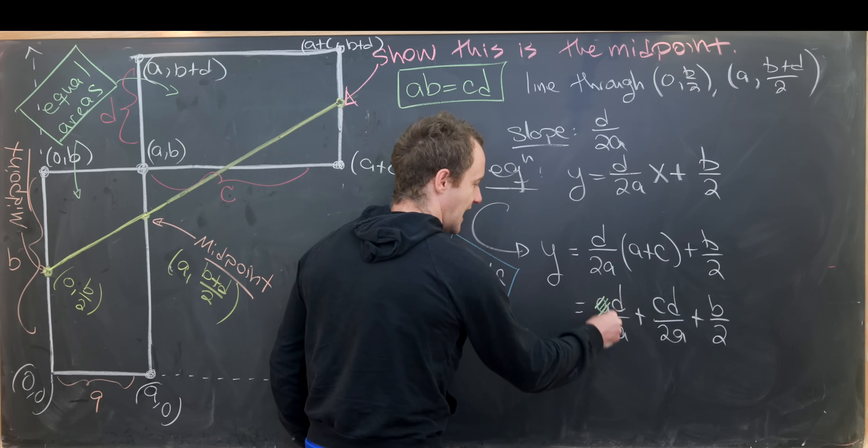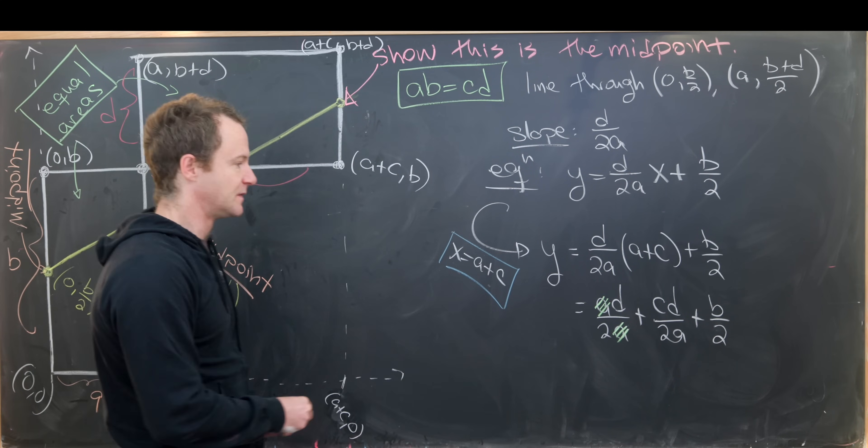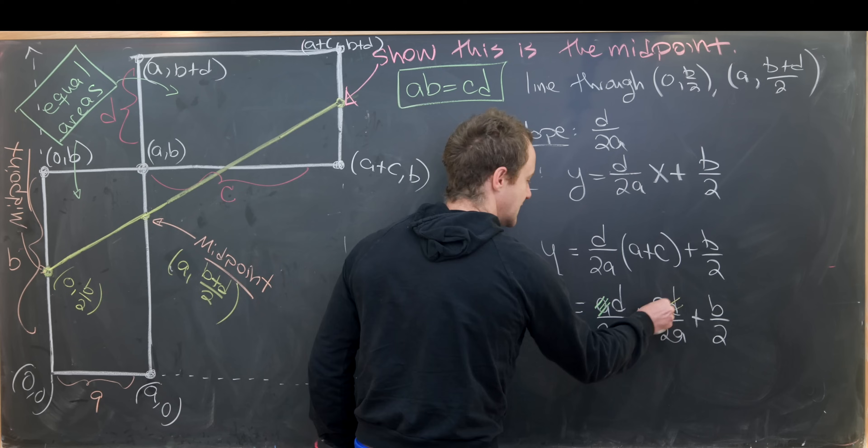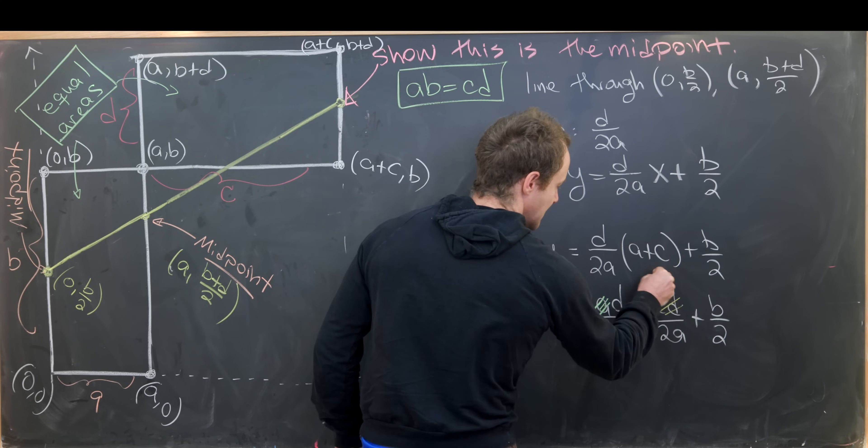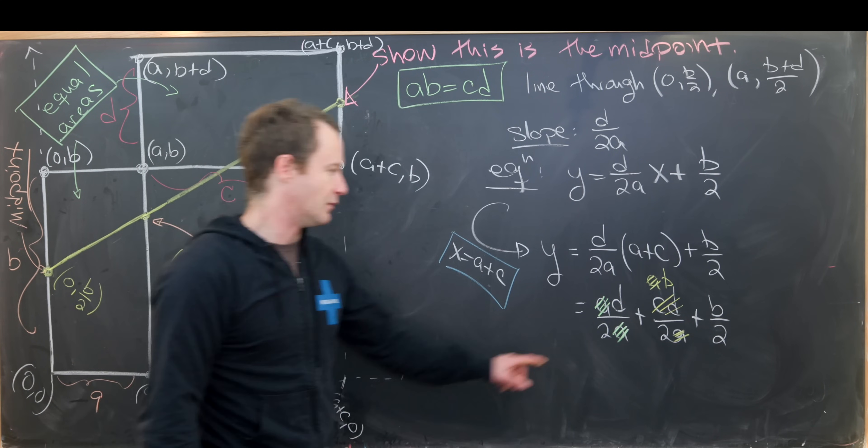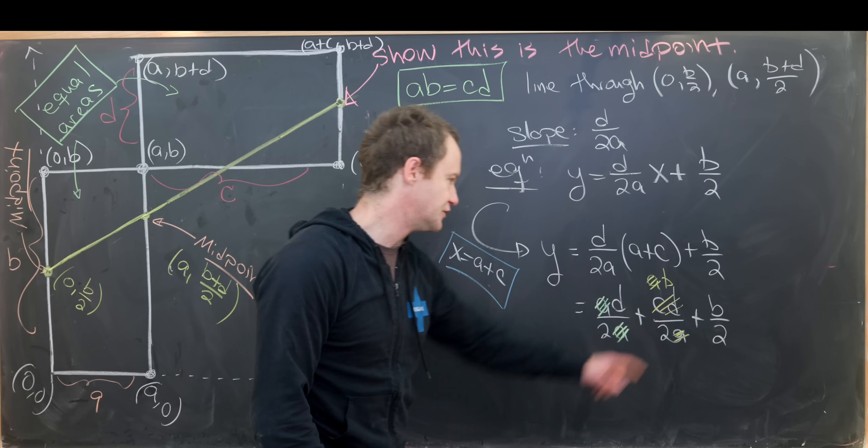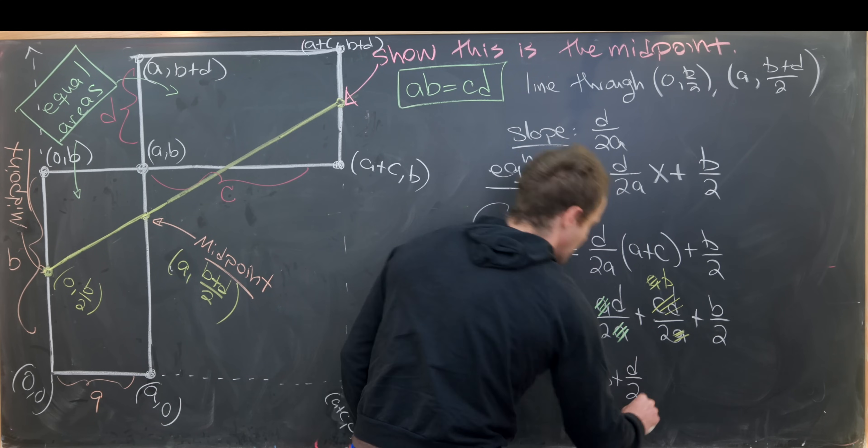So that's pretty clear. And then here we can use this equality of area to replace cd with ab. Now again the a will cancel with the a, and we have d/2 + b/2 + b/2, so that's going to give us (b+d)/2.